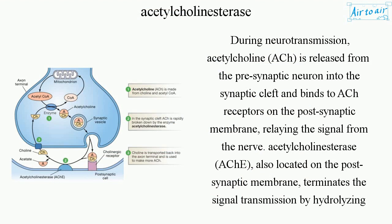During neurotransmission, acetylcholine (ACh) is released from the presynaptic neuron into the synaptic cleft and binds to ACh receptors on the postsynaptic membrane, relaying the signal from the nerve. Acetylcholinesterase (AChE), also located on the postsynaptic membrane, terminates the signal transmission by hydrolyzing ACh.